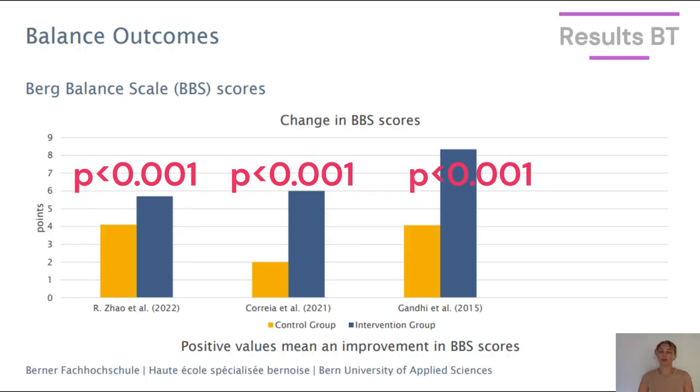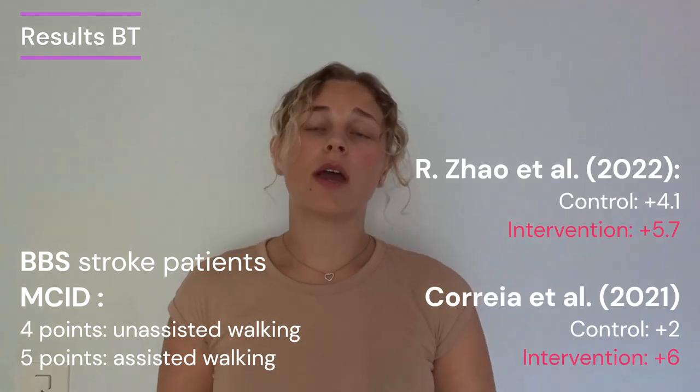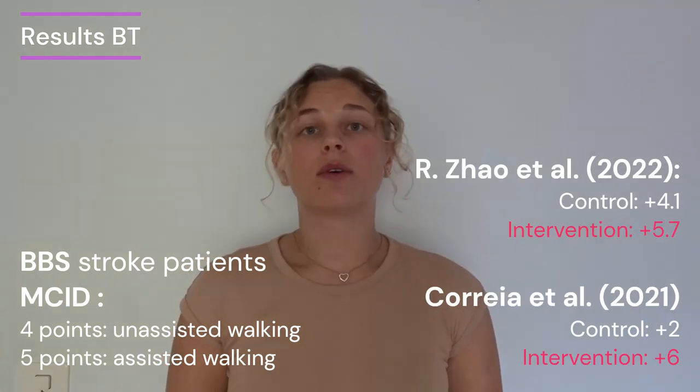The Burke Balance Scale was used by three of the six included studies. The two stroke studies with significant Timed Up and Go results also showed significant Burke Balance Scale results, as did Garnier et al., who studied cerebellar ataxia patients — though Garnier et al. showed a high risk of bias, so these results should be interpreted carefully. For the Burke Balance Scale in stroke patients, an MCID value was found: four points for unassisted walking and five points for assisted walking. Both Sao et al. and Gray et al. showed that the difference was clinically important.